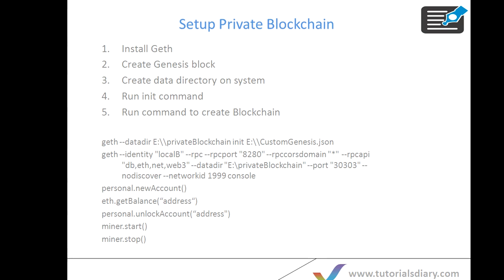In Ethereum, you have different types of blockchains. One is the mainnet blockchain, which is the actual live running Ethereum blockchain. If you want to interact with that mainnet blockchain, you have to pay some amount — you have to spend some Ether to make transactions. Apart from that, you also have test blockchains for testing your smart contracts, and you also have a Ganache blockchain for local testing. Many people have reached out to us asking what steps they need to follow to set up their own blockchain.